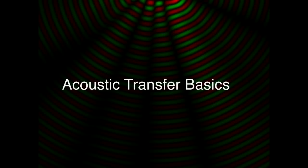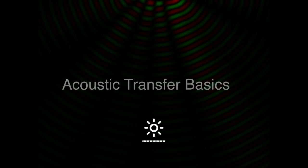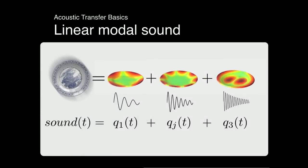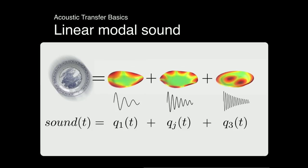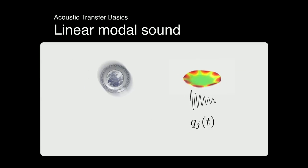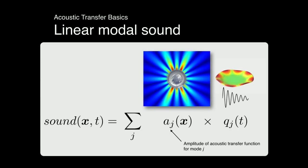For acoustic transfer basics, the key idea is that we have a model for linear modal sound. Using a software library, you can take a model, mesh it, compute the modes and frequencies, apply an impulse, and it will start vibrating. One model of sound is to add together all the individual vibrations of each modal oscillator. But it won't be predictive of true sound because it doesn't account for the air around it. In practice, we want to multiply each modal oscillation by some amplitude or transfer function.